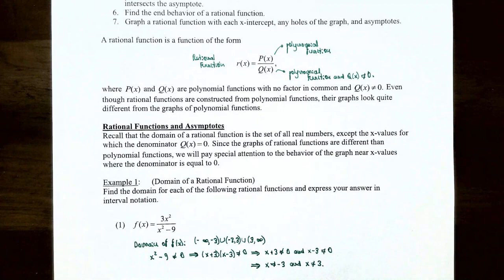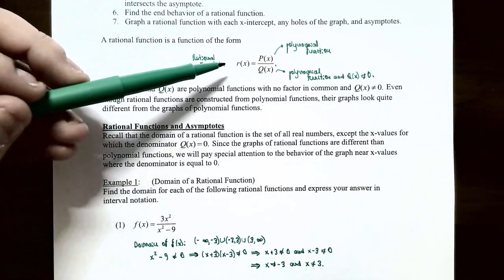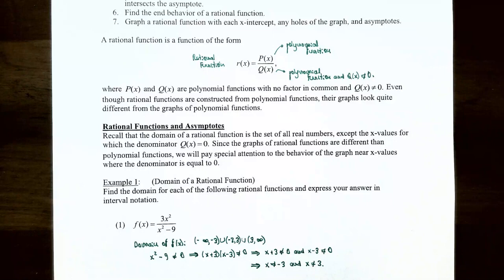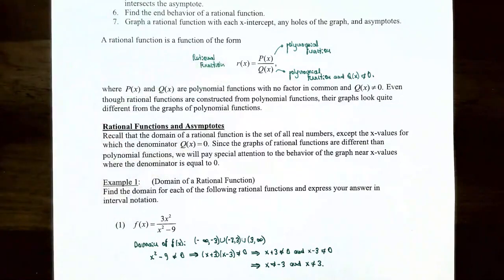So let's start off by talking about what is a rational function. A rational function, lowercase r of x, is a quotient of two polynomial functions. Your numerator p of x is a polynomial function and the denominator q of x is also a polynomial function, and we assume that p of x and q of x have no common factors — meaning you've already simplified completely by canceling any common factors. The only restriction is that q of x, the denominator, cannot be zero.